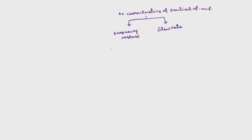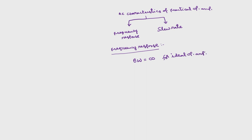First, I will discuss about the frequency response and how it is going to affect the performance of the operational amplifier. If you take an ideal operational amplifier, the bandwidth is infinity, and the open-loop gain is AOL, which is of the order of 90 dB in the case of the 741 IC operational amplifier.